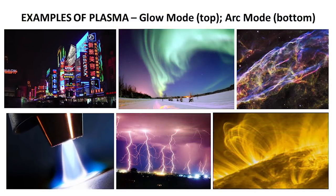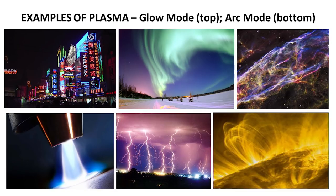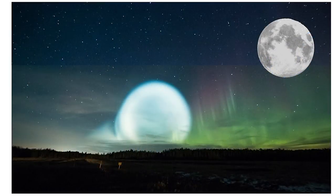Plasma has three forms: dark mode which is invisible to us; glow mode which we see in neon signs, auroras and gas clouds in space; and arc mode which we see in welders' torches, lightning and the sun. The form plasma takes depends on the amount of current flowing through it. Currently the plasma spheres of each planet are in dark mode and invisible to our eyes, but easily detected by instruments on spacecraft. However, these plasma spheres might not always have been invisible. Recent measurements indicate an electric differential between the sun, which is positive, and the outer solar system, which is more negative. In earlier times when the zero-point energy was much less, the electric differential throughout the solar system would have been greater, causing the currents to be stronger — which may well have resulted in the plasma spheres of the planets being visible in glow mode.